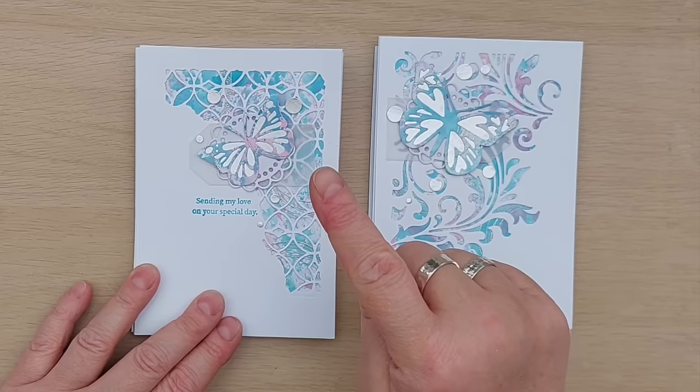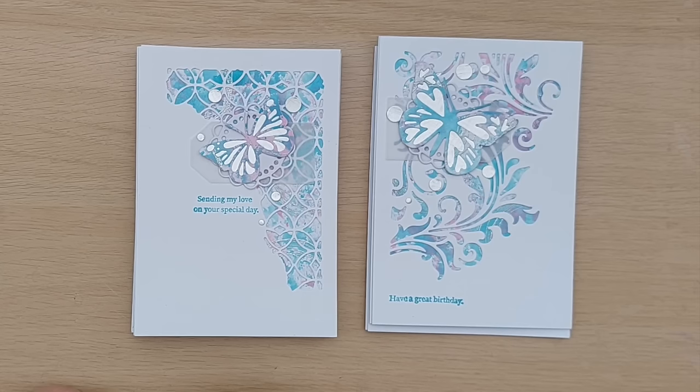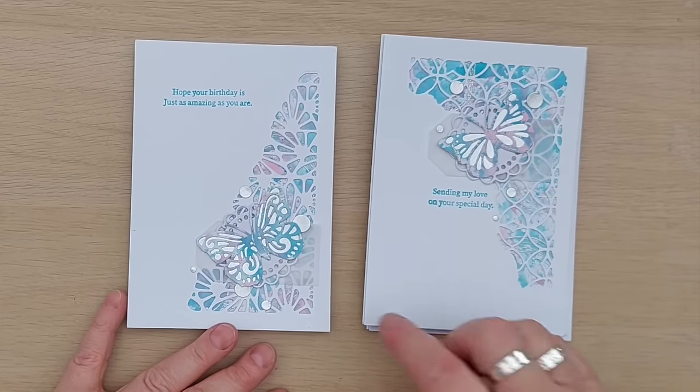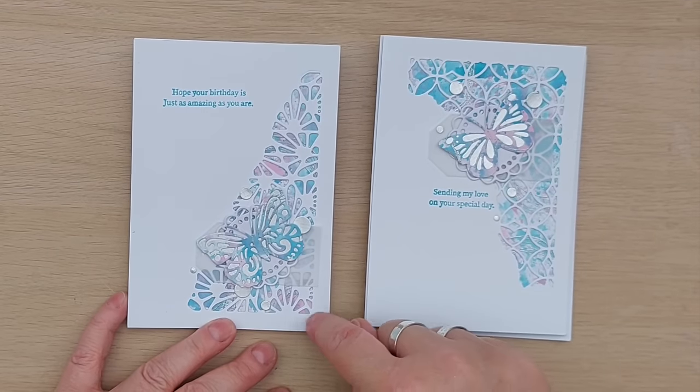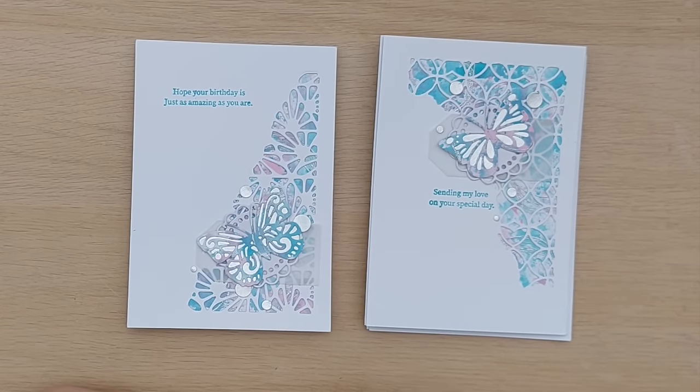For my next card, different aperture die and I put it in the top right corner. I use the vellum tag, the doily, different butterfly die though, and a sentiment 'my love on your special day' with the dots. And with this one I put the aperture in the bottom right hand corner—different butterfly die, different aperture die, different sentiment but everything else is the same.